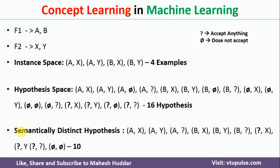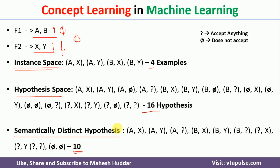To derive this count: f1 has 2 possibilities plus question mark = 3; f2 has 2 plus question mark = 3; so 3 × 3 = 9. With respect to null we have one more possibility, null-null, making the total number of syntactically distinct hypotheses 10.